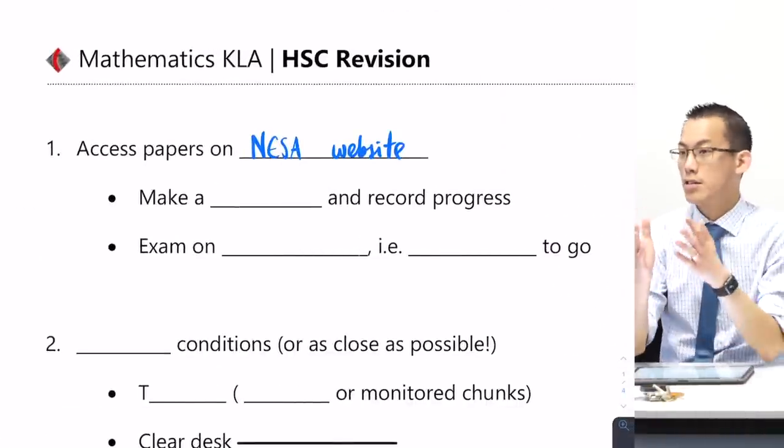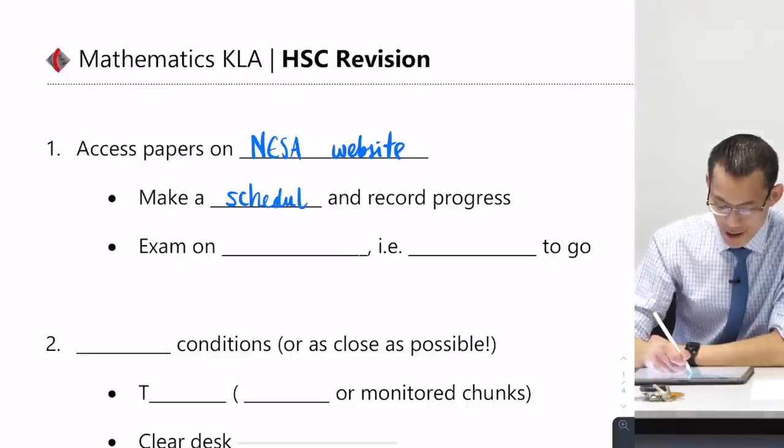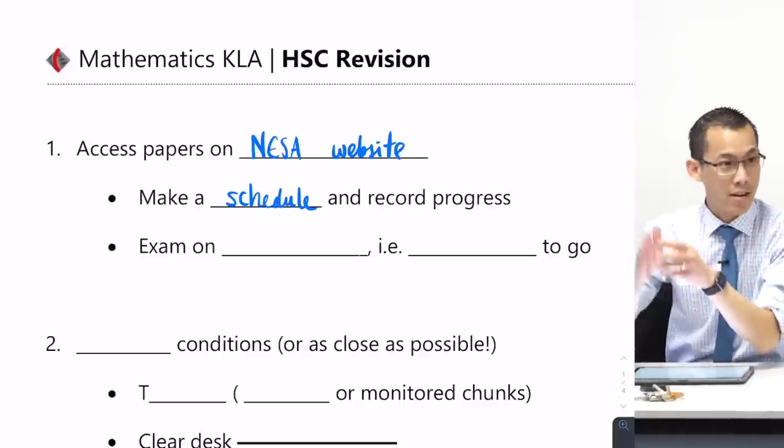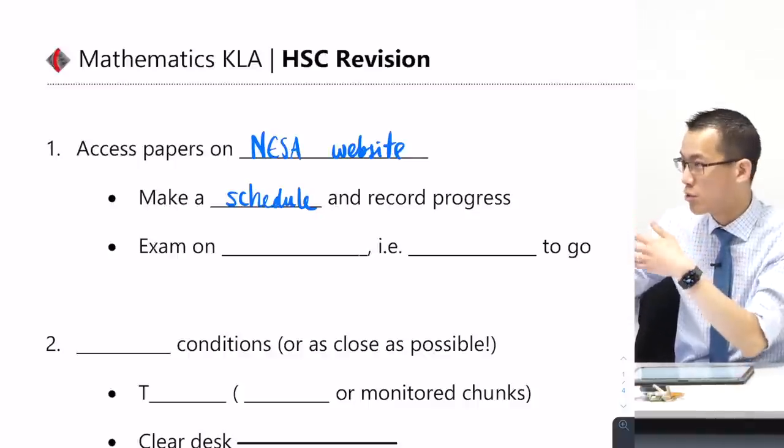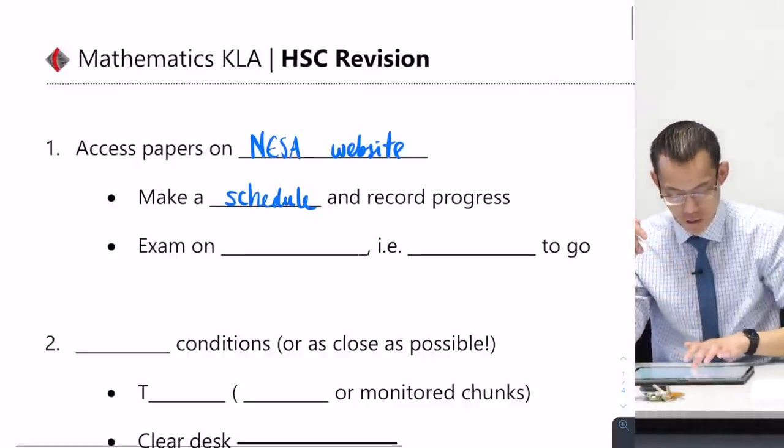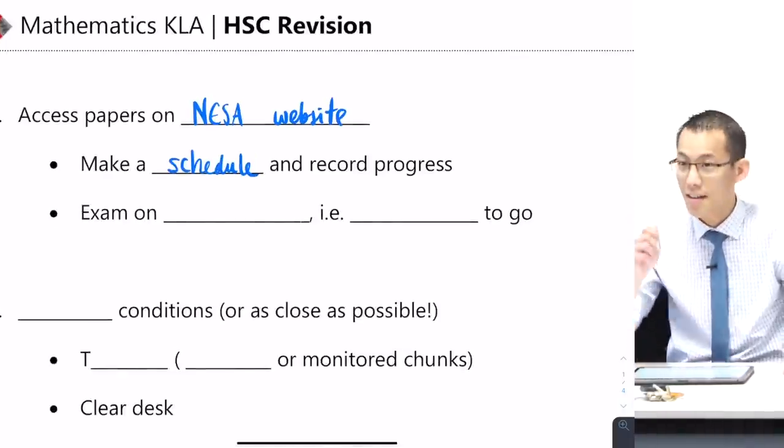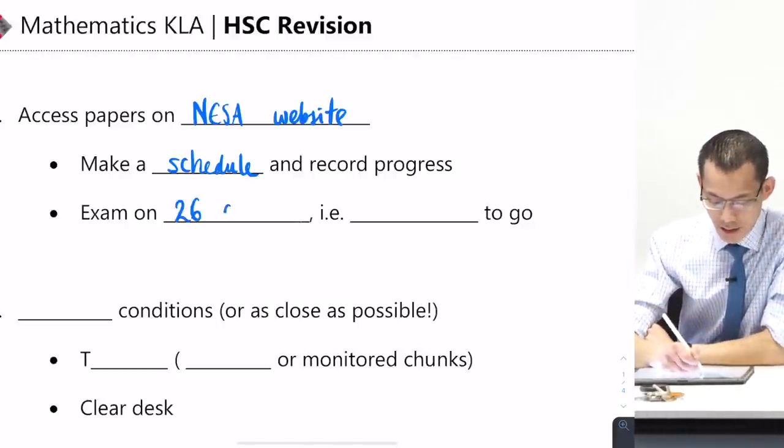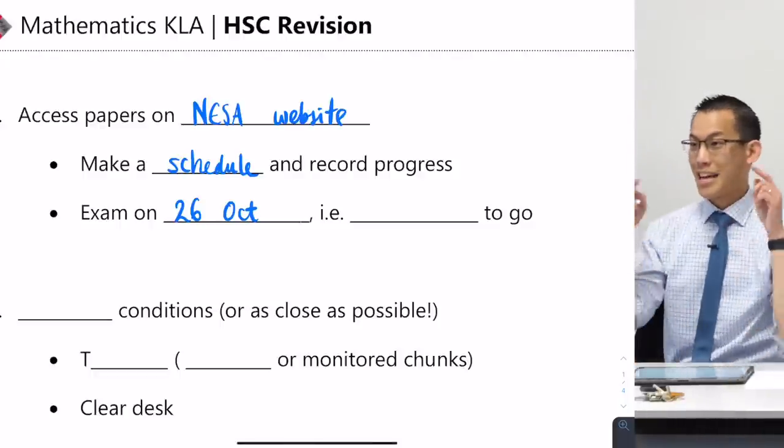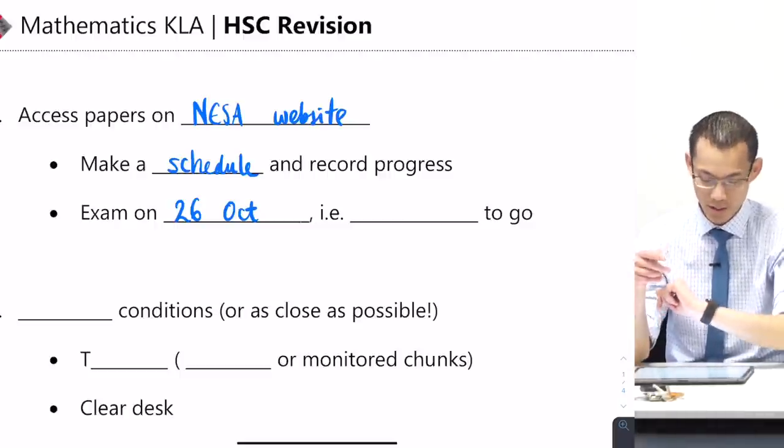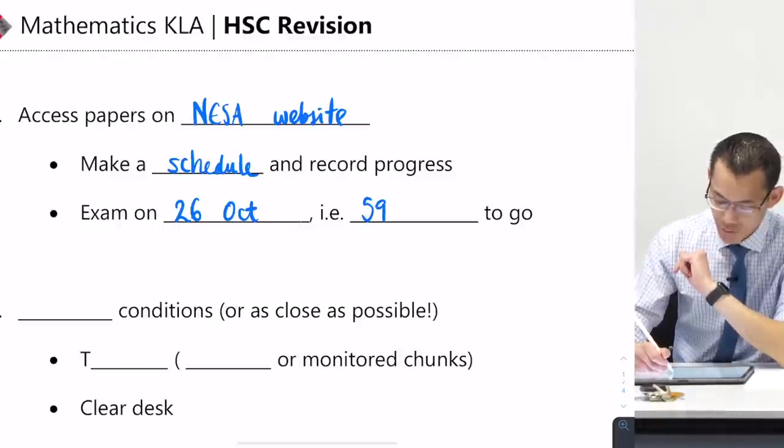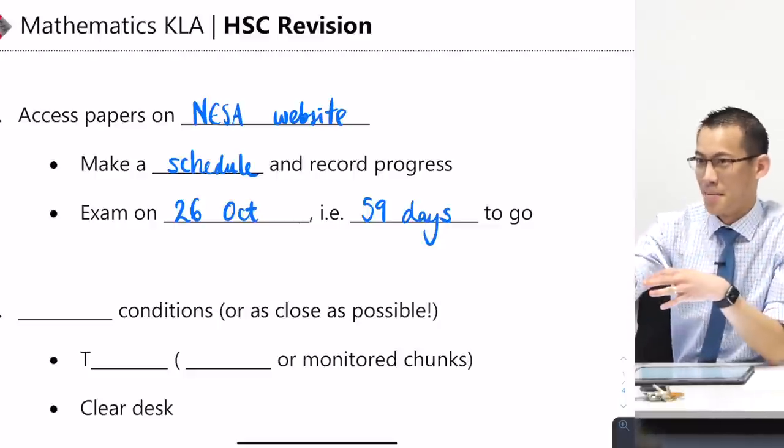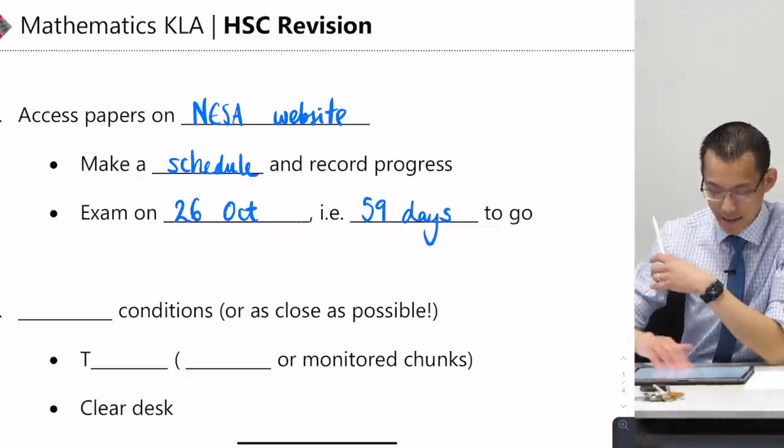So coming back to your piece of paper, what I suggest you do is you make a schedule and you decide, when am I going to do papers, right? If you fail to plan, you plan to fail. So you might say, okay, every week I'm going to do a paper, or every three days I'm going to do some amount of time. You'll see me talk about that in more detail later on.